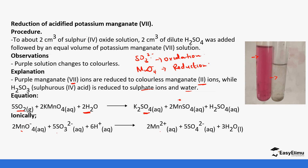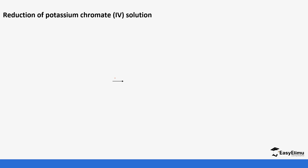When the sulfite ions undergo oxidation — that is, loss of electrons — they form sulfate ions. When the manganese(VII) ions undergo reduction they form manganese(II) ions. So the sulfite ions are the reducing agent and the potassium permanganate is the oxidizing agent.